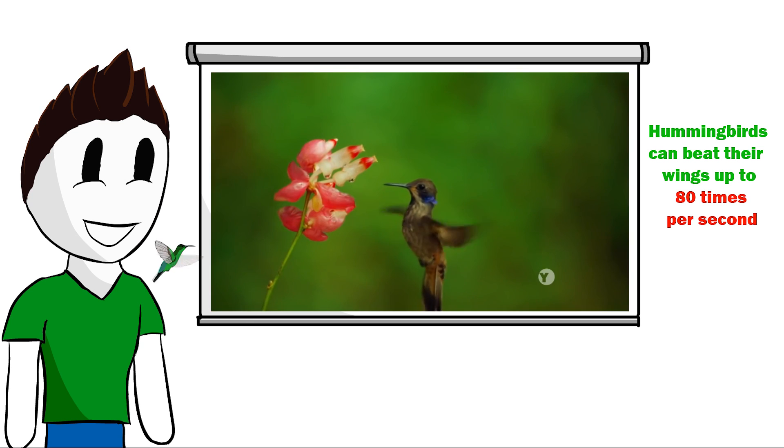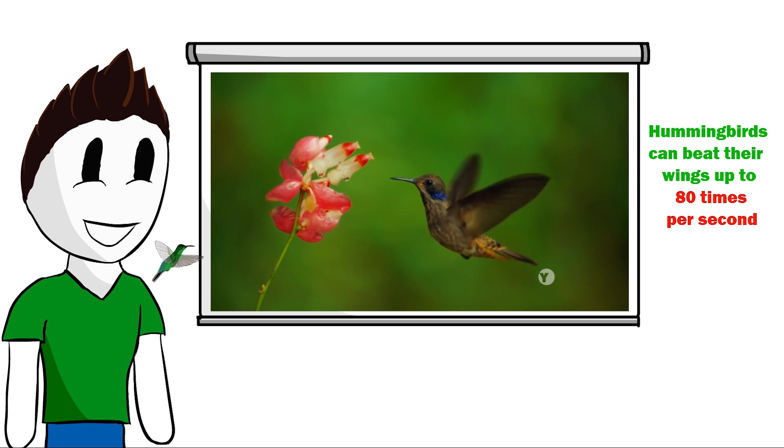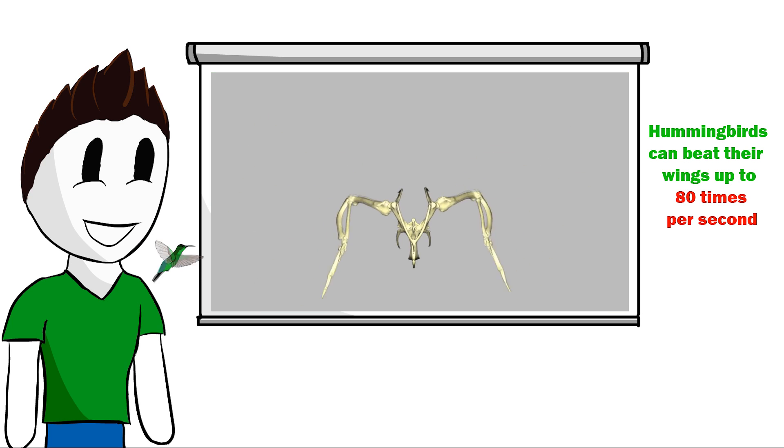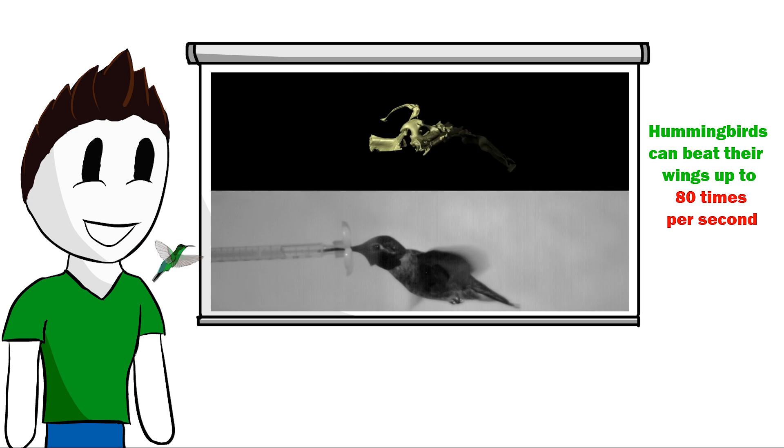For being able to fly unlike other birds, hummingbirds have to flap their wings unlike other birds. Most birds flap their wings up and down, but hummingbirds move their wings back and forward in a figure 8 movement.